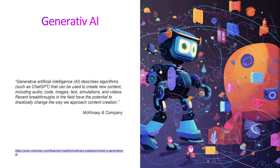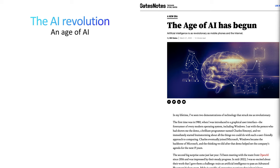Bill Gates said the age of AI has begun — artificial intelligence is as revolutionary as mobile phones and the internet. He is also one of the biggest investors through Microsoft in OpenAI, which made ChatGPT, so he has a little vested interest. But I absolutely agree because these tools can be very big if we use them correctly. AI is not a new thing — I expect roughly half to 70% of you are working on a thesis in machine learning or data science, and you know AI has been worked on for many years.